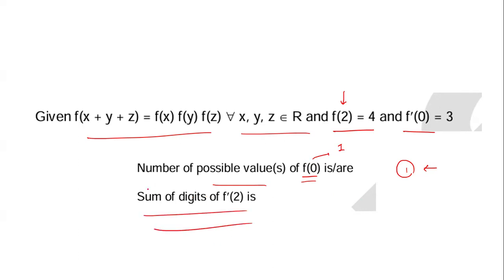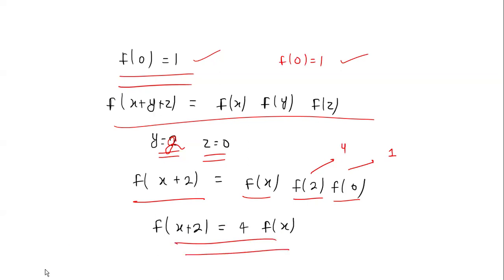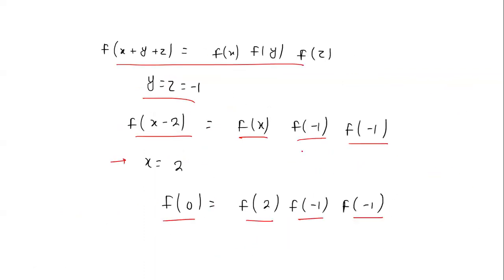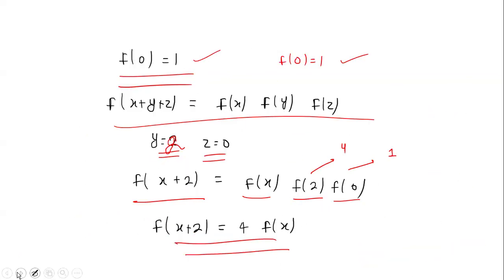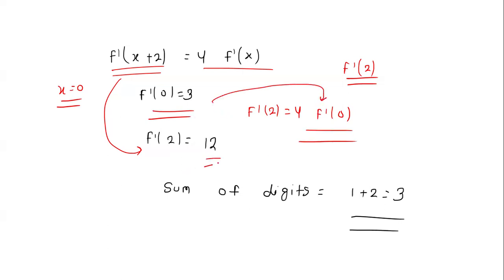The second problem is to find the sum of digits of f'(2). Using the original relation, put y = 2 and z = 0. We get f(x+2) = f(x)·f(2)·f(0) = f(x)·4·1 = 4·f(x). Differentiating both sides gives f'(x+2) = 4·f'(x). Putting x = 0: f'(2) = 4·f'(0) = 4·3 = 12.